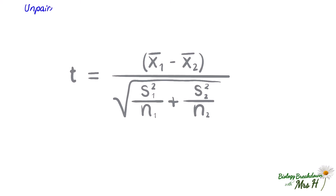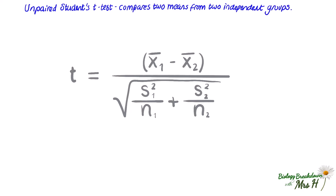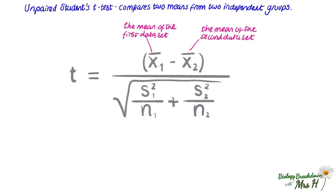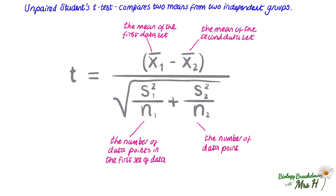We'll start with the unpaired student's t-test. This compares two means from two independent groups. In the formula, you have the mean of the first data set and the mean of the second data set — these are what we are going to compare. Then you have n₁, the number of data points in the first data set, and n₂, the number of data points in the second data set.